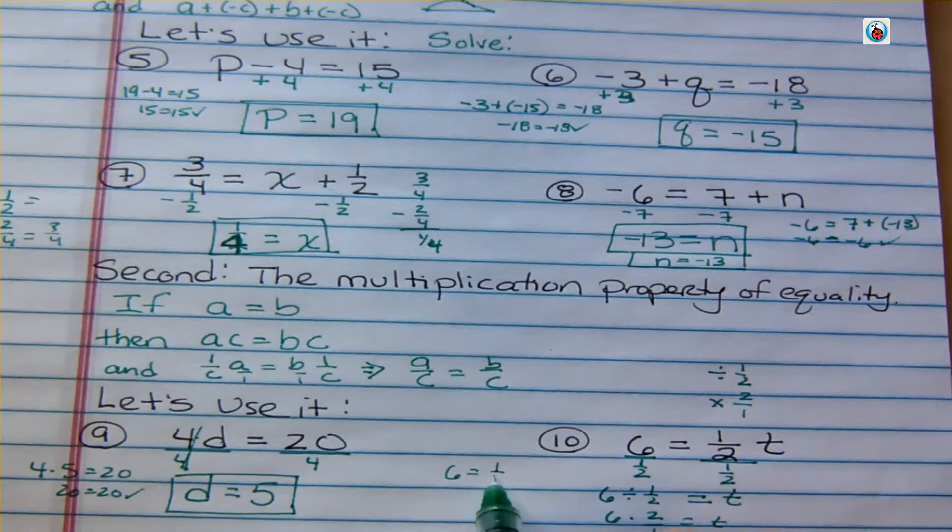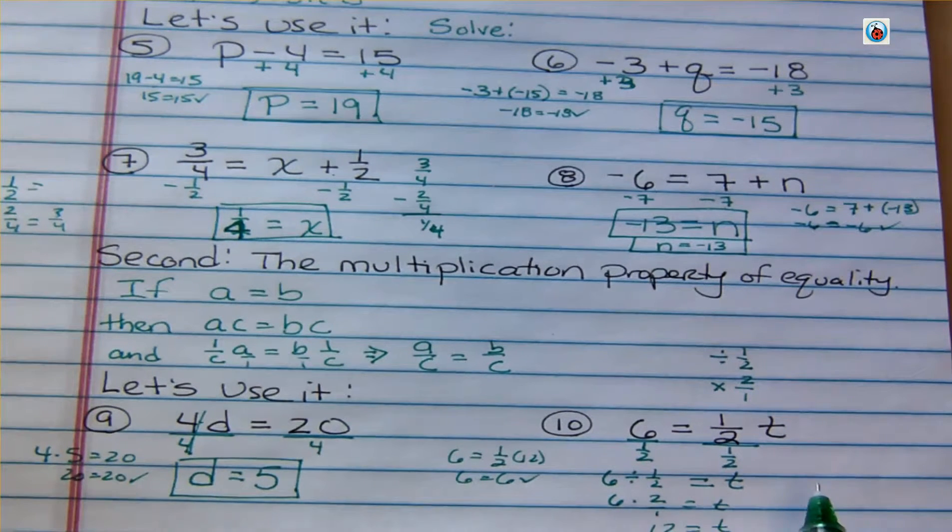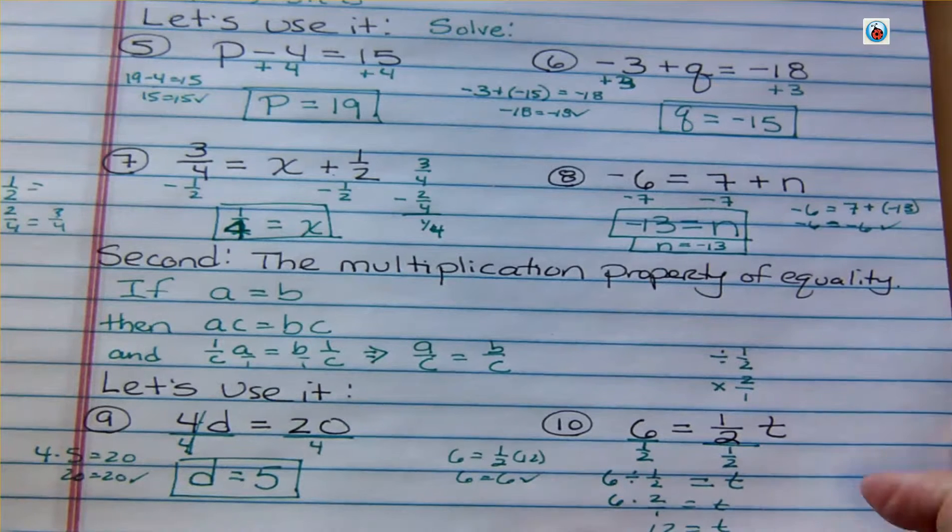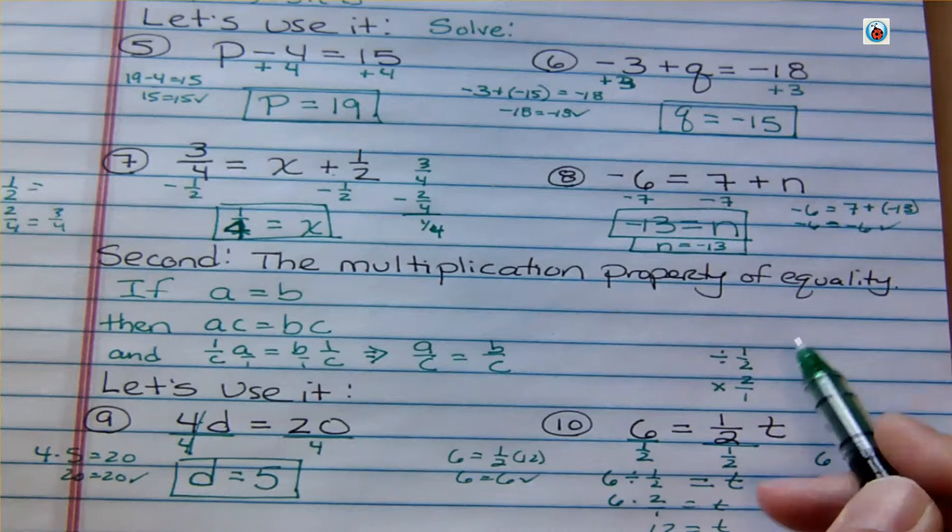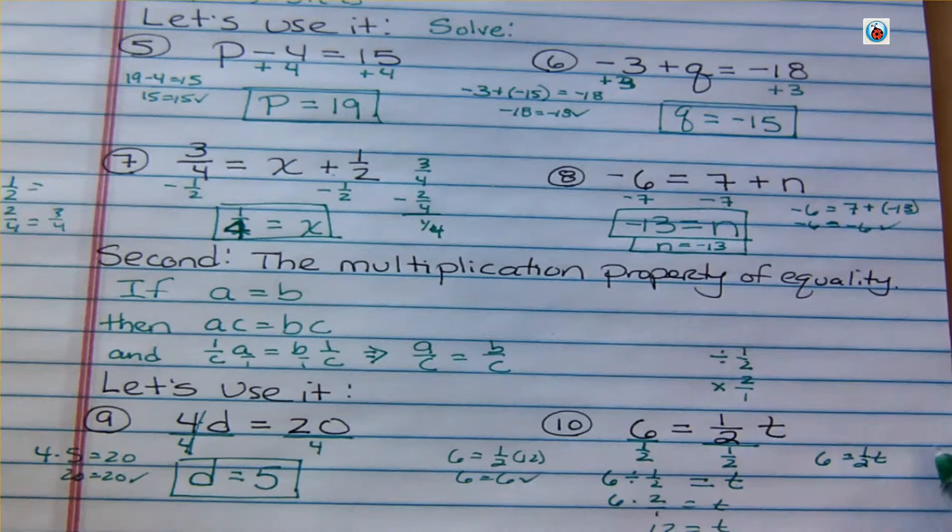6 equals 1 half times 12. So I don't have to believe it. I can check it. And then I can go back here and do this another way. And that is 6 equals 1 half T. But I know that dividing by 1 half is the same as multiplying by 2 over 1. So let's just do that.